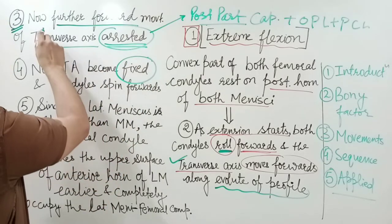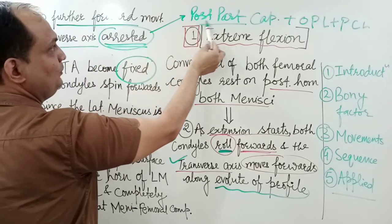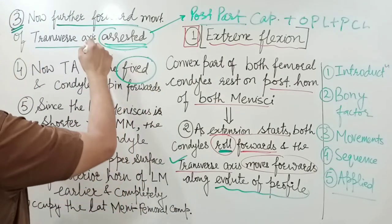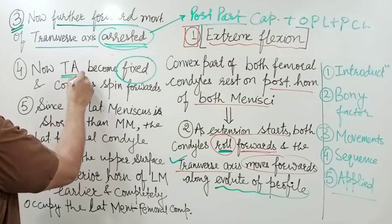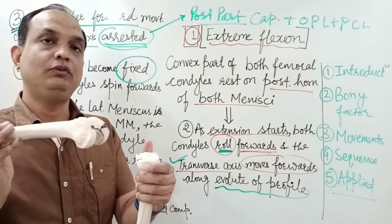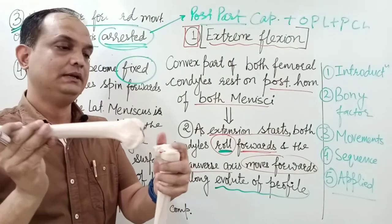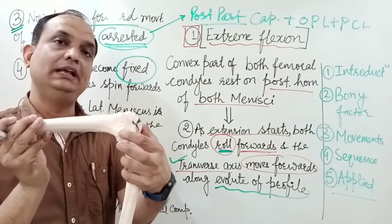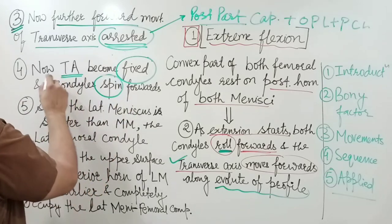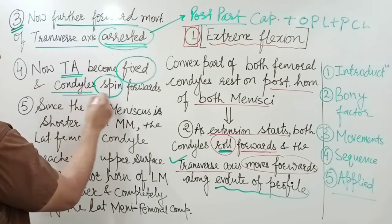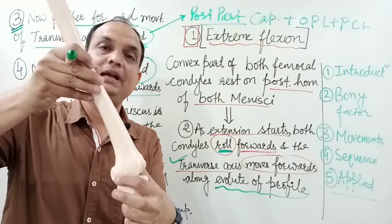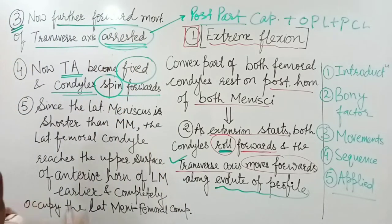Now the transverse axis becomes fixed because its further forward movement is arrested by the posterior part of the capsule, oblique popliteal ligament, and posterior cruciate ligament. Since rolling had two components — forward movement and extension — and forward movement is now stopped, only pure extension continues. This is now known as spin forward: the transverse axis is fixed and both femoral condyles spin forward.